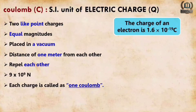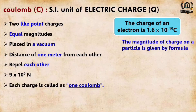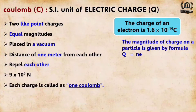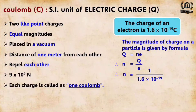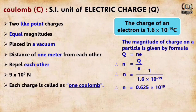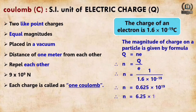The charge of an electron is 1.6 × 10⁻¹⁹ Coulombs. The magnitude of charge on a particle is given by the formula Q = ne, where Q is charge, n is the number of electrons, and e is the charge of one electron. Rearranging, n = Q/e. Putting the values: n = 1 / (1.6 × 10⁻¹⁹) = 6.25 × 10¹⁸.